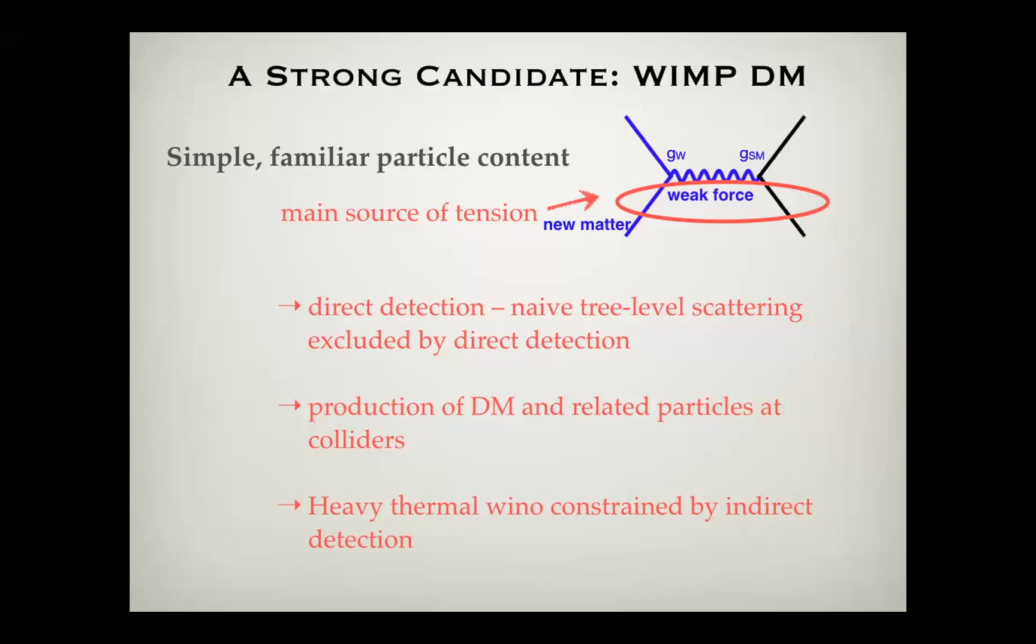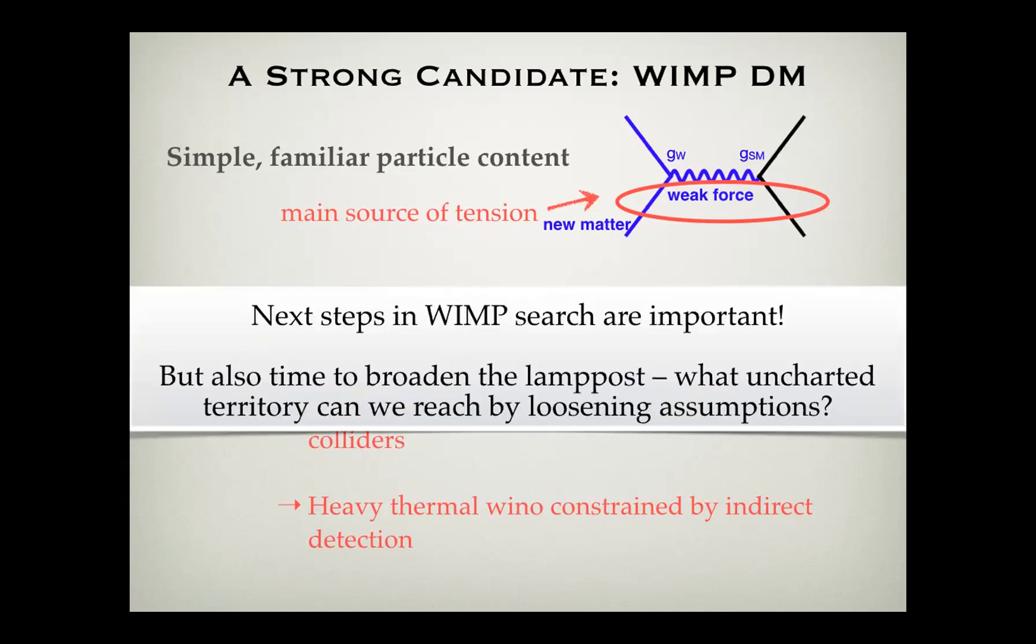Now that said, 20 years ago, 30 years ago, when people were first starting to talk about WIMPs, there are several places that we expected we might well see WIMPs that they have not actually been seen in the intervening years, even though we have looked there. For example in direct detection, there was a naive expectation that you should have tree-level scattering through Z for most models of WIMPs, and that's now been excluded by direct detection. Production of dark matter and related particles at colliders is another thing that's now been explored to very high energies by the LHC.